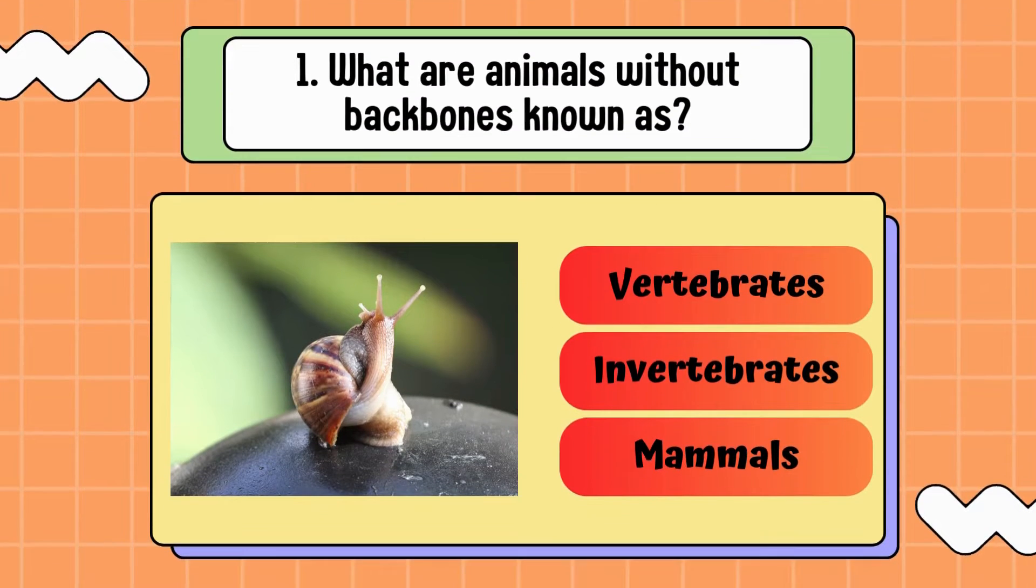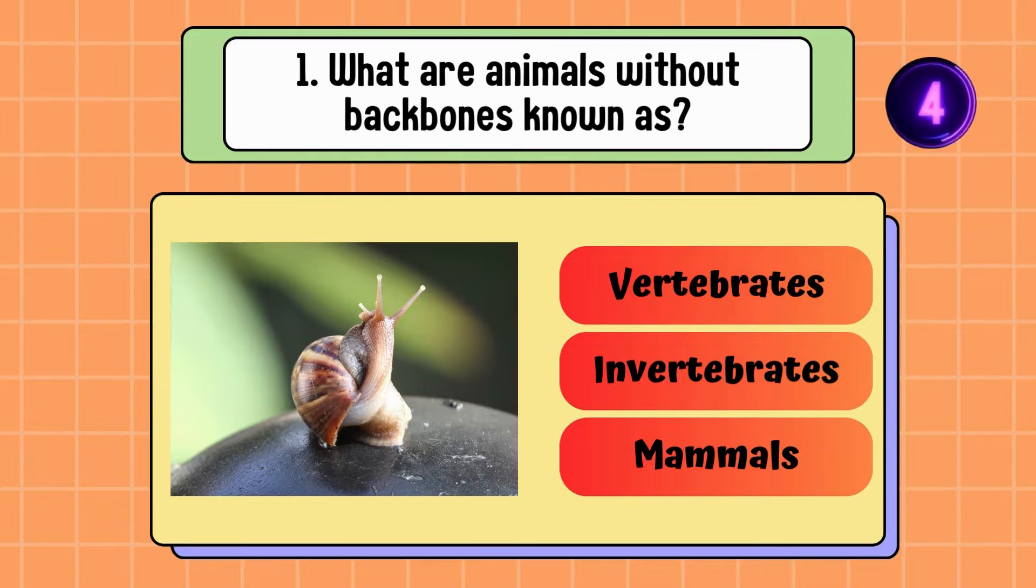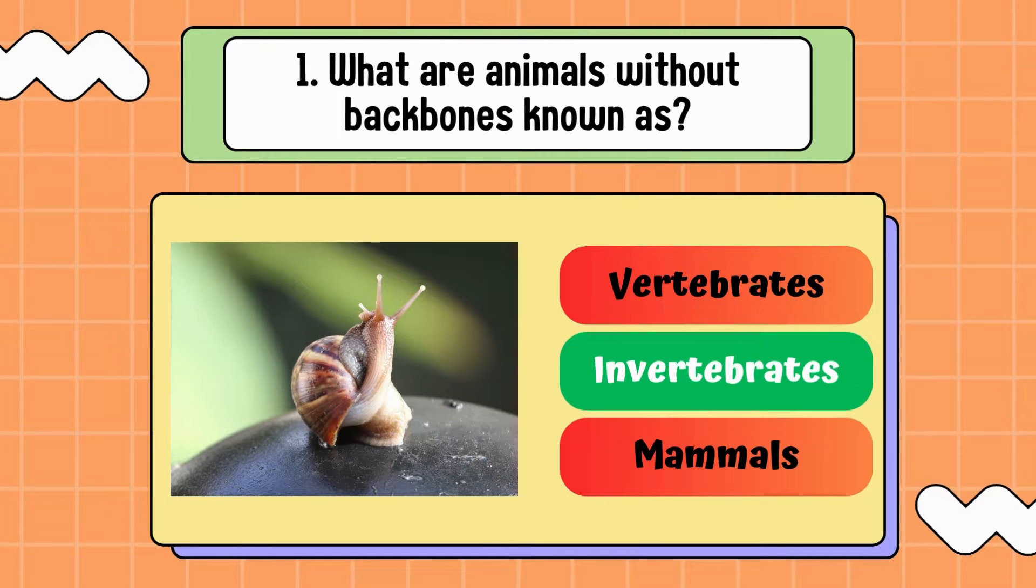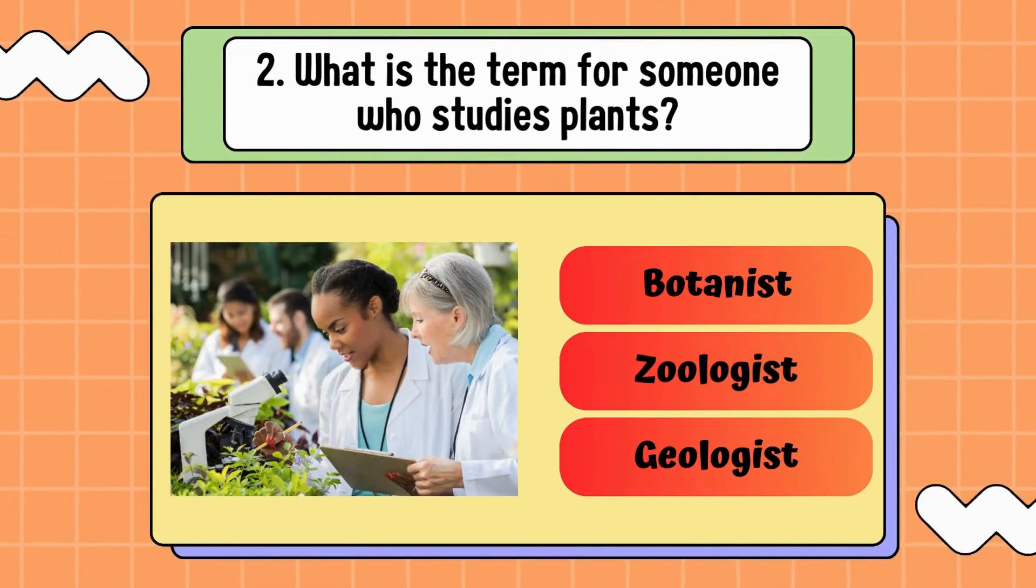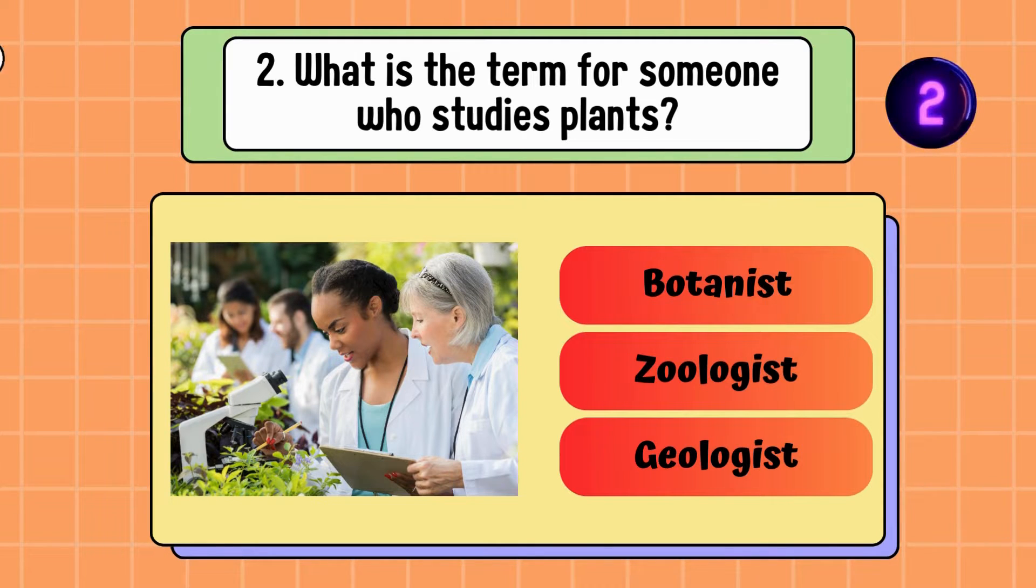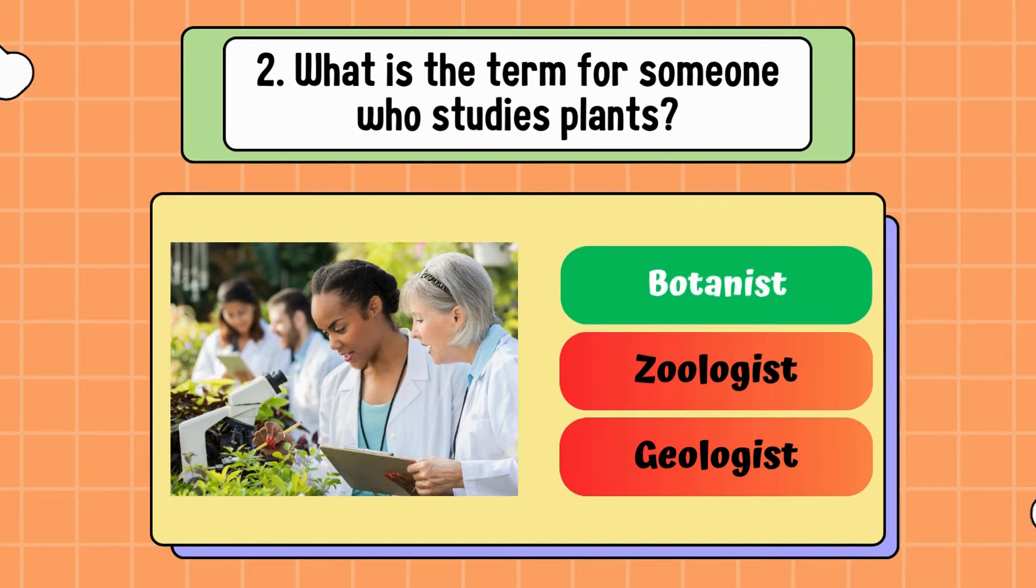What are animals without backbones known as? Vertebrates, invertebrates, or mammals? Correct answer is invertebrates. What is the term for someone who studies plants? Botanist, zoologist, or geologist? Answer is botanist.